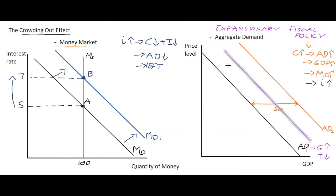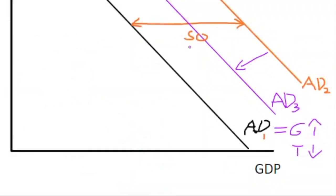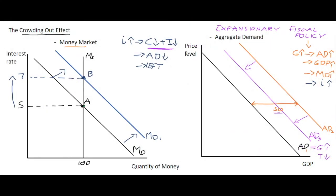So we started off at AD1, the government spent more money which pushed us out to AD2, but now because the private sector is partially crowded out, we have AD3, where the aggregate demand curve has shifted back left — not to its original level, but some of that 50 billion of expansionary fiscal policy has been crowded out through reduced consumption and investment. The increase in output and spending will therefore be less, and you may not see the full 50 billion being injected into the economy.